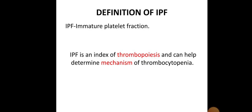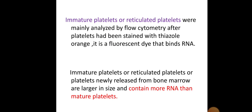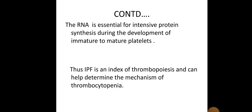Coming to the definition of immature platelet fraction: it is an index of thrombopoiesis and can help to determine the mechanism of thrombocytopenia. These immature platelets, also known as reticulated platelets, are mainly analyzed with flow cytometry after the platelets have been stained with thiazole orange, which is a fluorescent dye that stains RNA. Immature platelets newly released from the bone marrow are larger in size and contain more RNA than mature platelets. The RNA is essential for intensive protein synthesis during the development from immature to mature platelets.